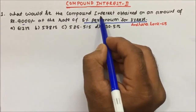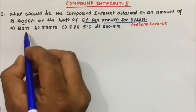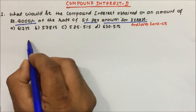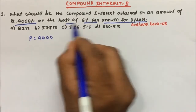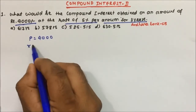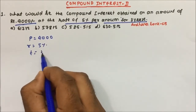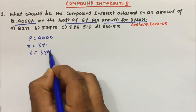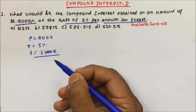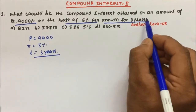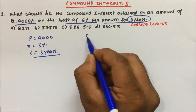Question number one: what is the compound interest obtained on an amount of rupees 4000? Principal is given as 4000, rate is given as 5%, and time is given as 3 years. In the previous video we calculated compound interest for 2 years; in this video we are going to calculate compound interest for 3 years.